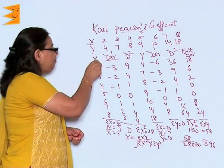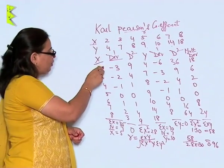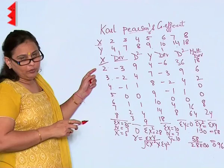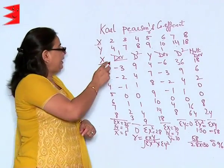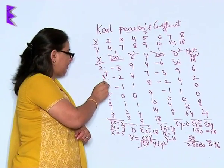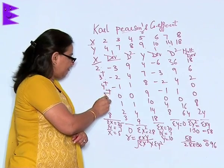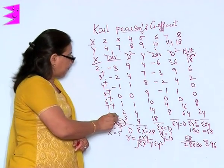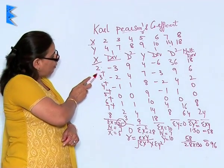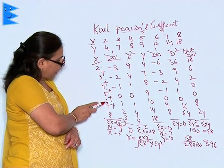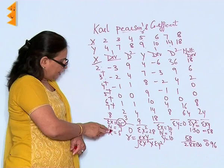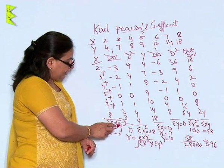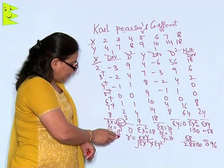First of all, I write the number of observations of X, which is 2, 3, 4, 5, 6, 7 and 8. So I will find out sigma X. Sigma X will be 2 plus 3 plus 4 plus 5 plus 6 plus 7 plus 8, which gives me 35. The number of observations is 7, which means X-bar will be 35 divided by 7, giving me 5.